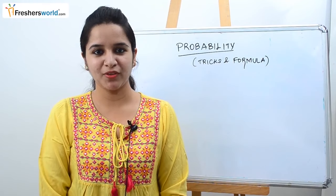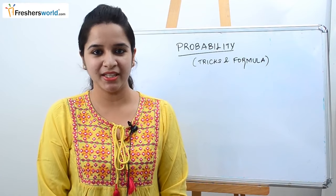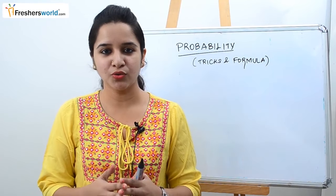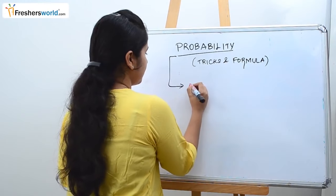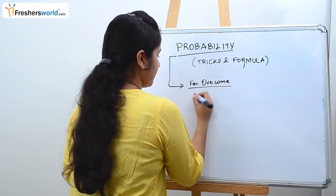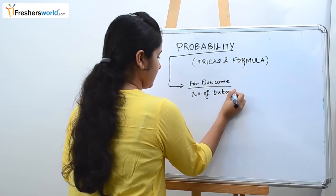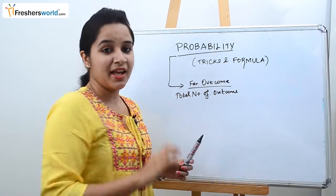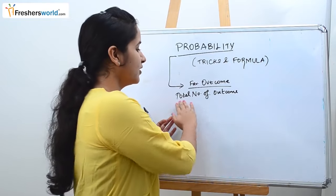Before going in depth into the topic, we should know what probability is. The basic definition of probability is how likely an event is supposed to happen. The basic formula one needs to know to solve an aptitude sum in probability has the favorable outcome in the numerator divided by the total number of outcomes.